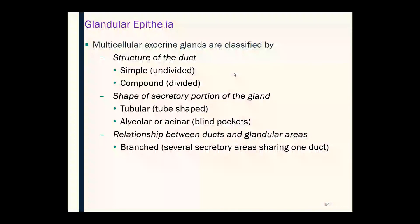More complex are the multicellular exocrine glands. We classify these glands by looking at the structure of the ductwork, by looking at the shape of the actual glandular portion that makes the secretion, and also by the relationship between the duct and the glandular areas. If the ductwork in the gland is undivided and straight, we call it simple. If it branches, we call it compound.